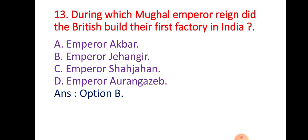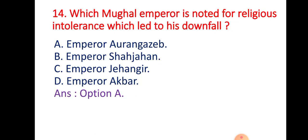Question 13: During which Mughal emperor's rule did the British build their first factory in India? Option A & B: Emperor Jahangir; Option C: Emperor Shahjahan; Option D: Emperor Aurangzeb. The right answer is Option B — Emperor Jahangir.